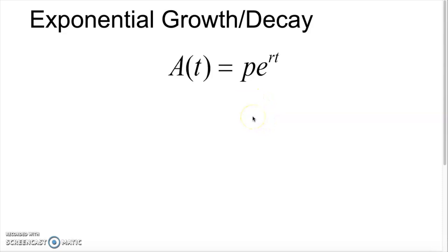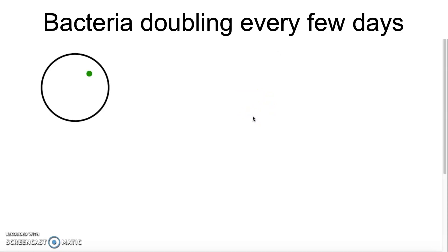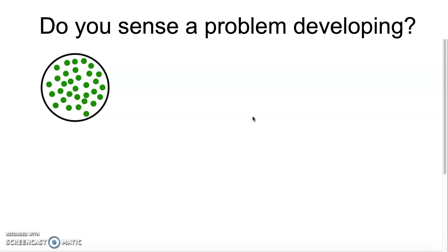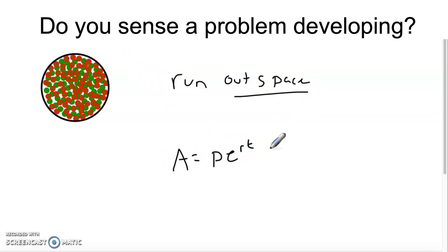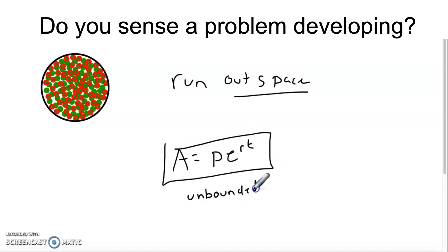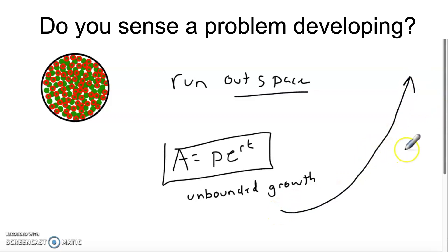We run into problems when we try to apply this to the natural world. A classic example is bacteria in a petri dish — one bacterium, then two, then four, eight, sixteen, thirty-two. For a while this works fine, but at some point the dish starts to get really full and we run out of space. So the formula A = Pe^rt works great in an unbounded situation — unbounded growth — and works really well for something like money.